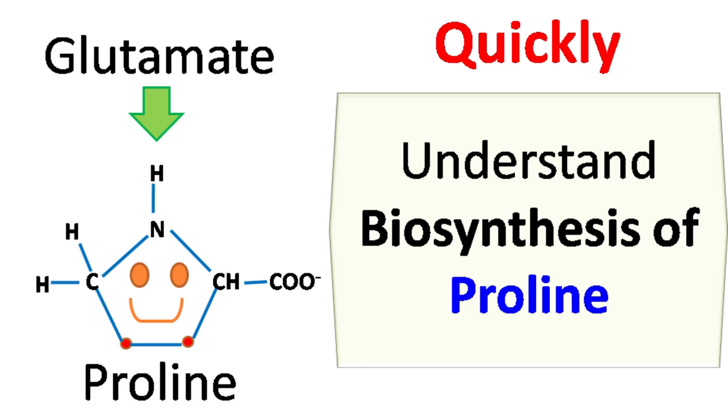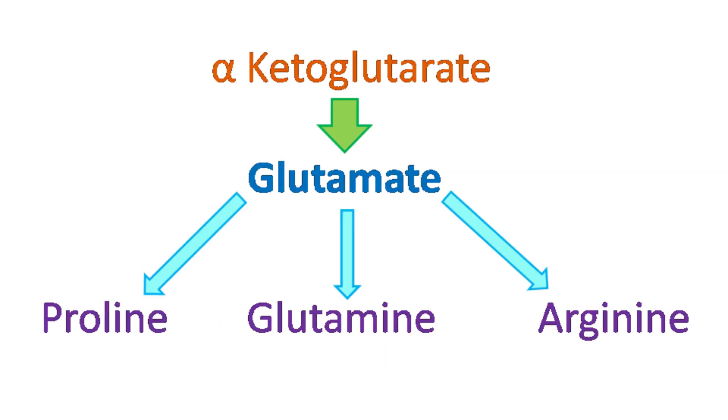Hey everyone, quick biochemistry basics here. Let's talk about biosynthesis of proline. Proline is synthesized from glutamate, which is in turn synthesized from alpha ketoglutarate, which is a product formed during glycolysis.